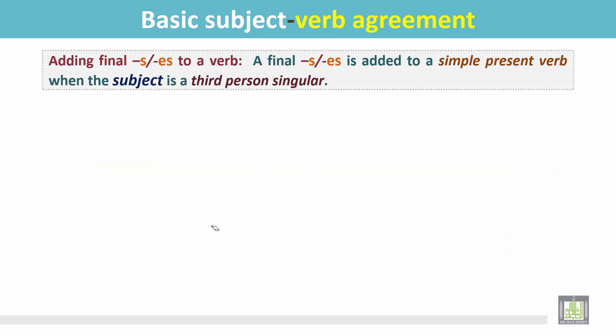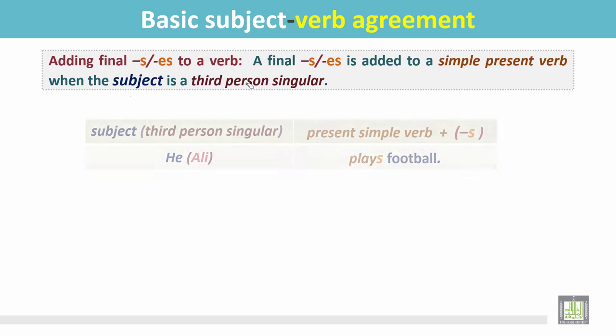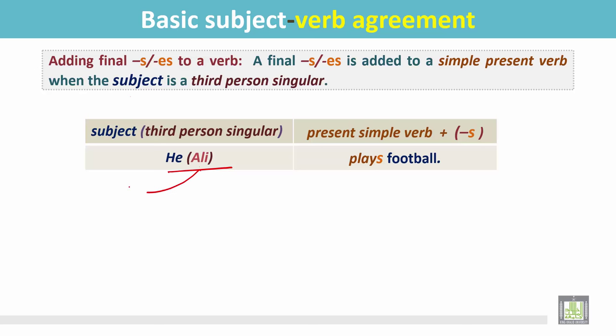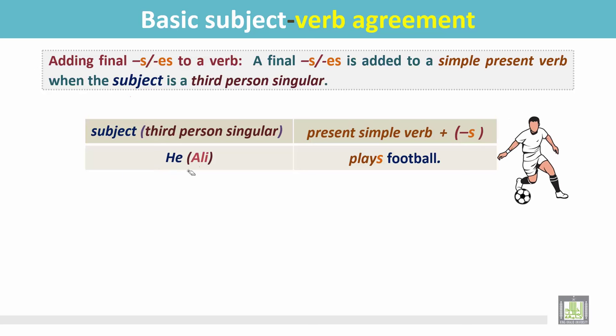A final S or ES is added to a simple present verb when the subject is the third person singular. We see the noun Ali — it is a singular noun. We change Ali to 'he,' a singular pronoun. Ali plays football; we can say he plays football.